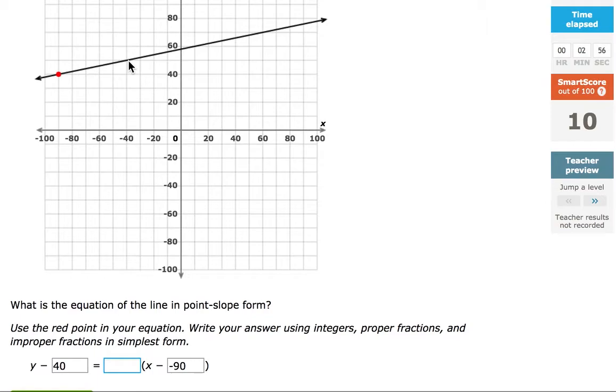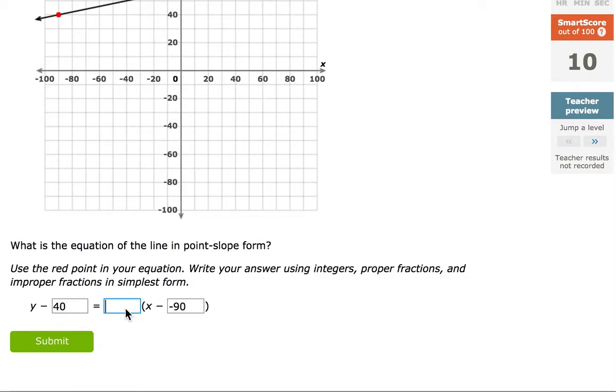We can use this given point and this other point here. The rise in this case, counting by 10, is 10 over 10, 20, 30, 40, 50. 10 over 50. If you think of the fraction 10 over 50, you can reduce by dividing both by 10. That becomes 1 over 5.